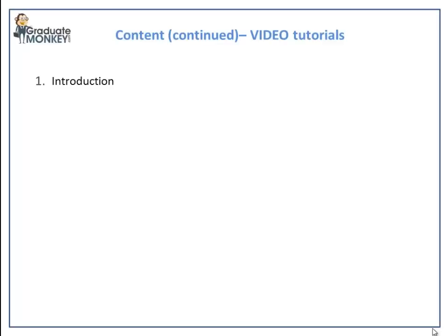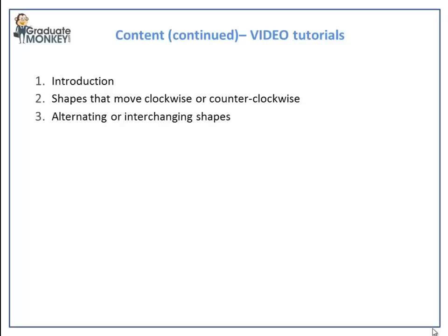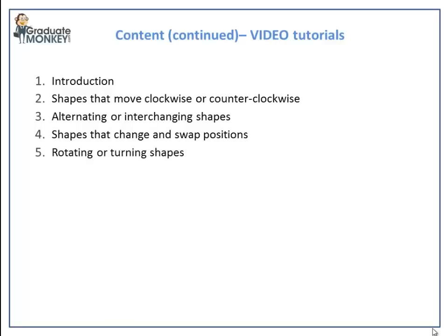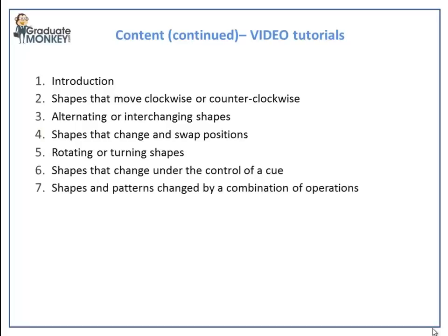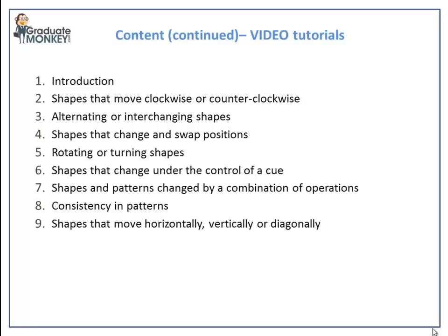The videos cover the following categories of logical reasoning problems: shapes that move in a clockwise or counterclockwise order; shapes that change into something else or alternate among themselves; shapes or patterns that swap continuously in a set order; shapes that rotate or turn in a set order; shapes that change under a certain cue or trigger; shapes and patterns that change by a combination of operations; sequences of shapes and patterns that have consistent or identical features; shapes that move horizontally, vertically, or diagonally; and finally, constructive patterns formed by continuously changing symbols or shapes.